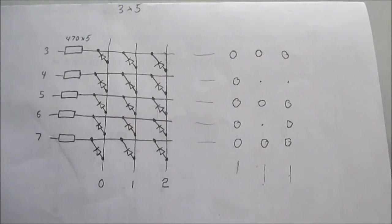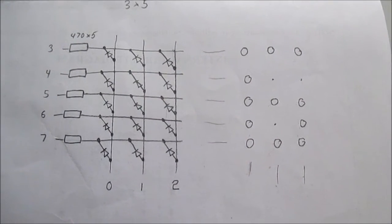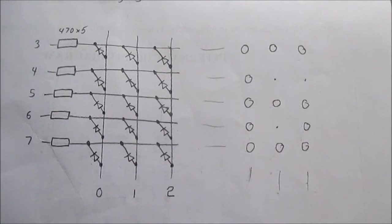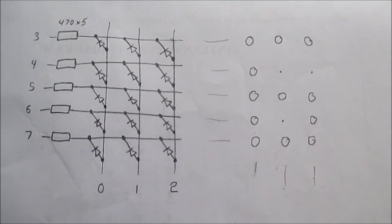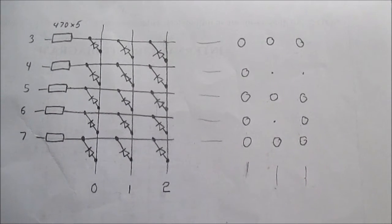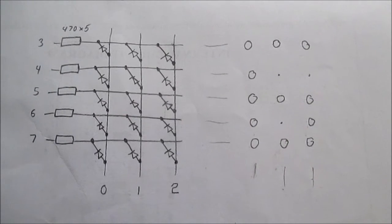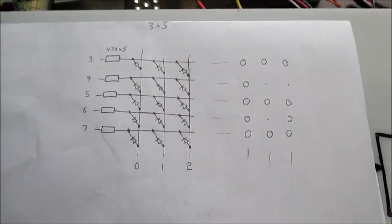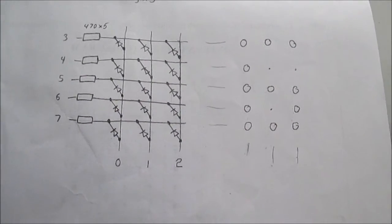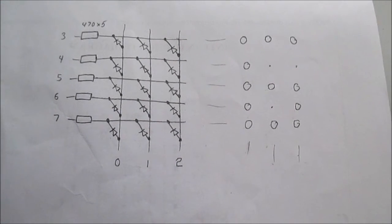But there's something called charlieplexing that allows you to control a great number of LEDs from a limited amount of output lines. For example, if I had eight output lines, I can control 56 LEDs. And the formula for that is the number of output lines you have squared minus the number of output lines.